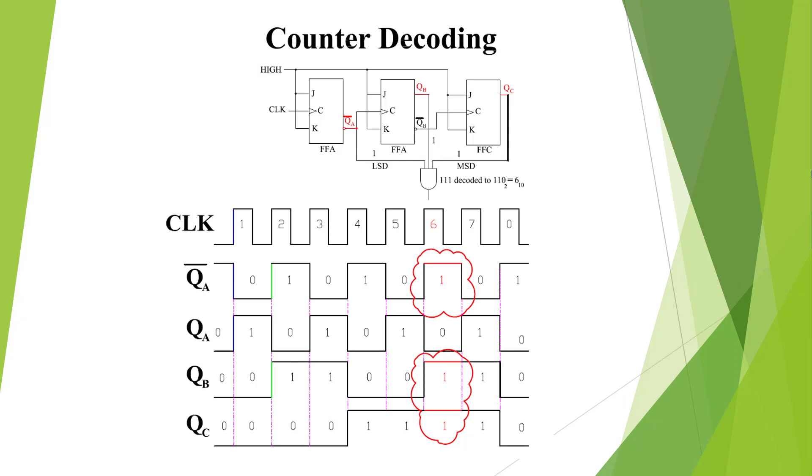We've gone from our binary counters and what we want to do is decode out to different numbers besides the basic 2, 4, 8, and 16. This is an asynchronous counter. As it stands without the decoder it is a divide by 8.